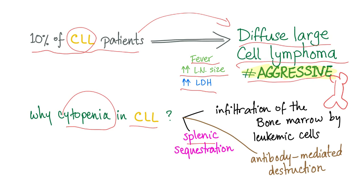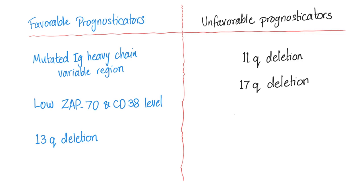Why do we have cytopenia in CLL? Three reasons: number one, infiltration of the bone marrow by the leukemic cells; number two, splenic sequestration; number three, antibody-mediated destruction. Regarding prognostic factors, note that 13q deletion has a favorable prognosis in CLL — contrast that with the 5q deletion, which had a good prognosis in MDS (myelodysplastic syndrome).